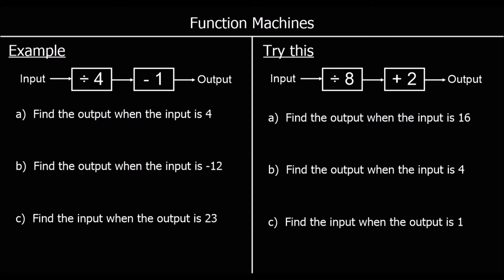So here is another example. This time the machine says divide the input by 4 and then take away 1. Find the output when the input is 4. So we're going to do 4 divided by 4 — how many 4s make 4? That's 1. And then take away 1, well that's 0. So the output is 0.